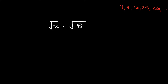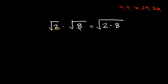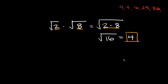Let's try another one. Let's say we had the square root of 2 times the square root of 8. Whenever you're multiplying radicals together, you can actually just multiply the numbers together and put them all under one radical. So the square root of 2 times the square root of 8 is equal to the square root of 2 times 8. You can literally just combine whatever's inside these radicals underneath one big radical symbol. What is 2 times 8? That's equal to 16. So we have the square root of 16, which equals 4. So 4 would be your answer.